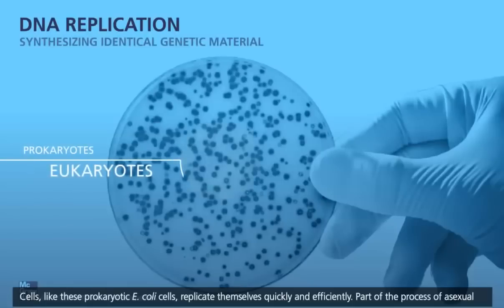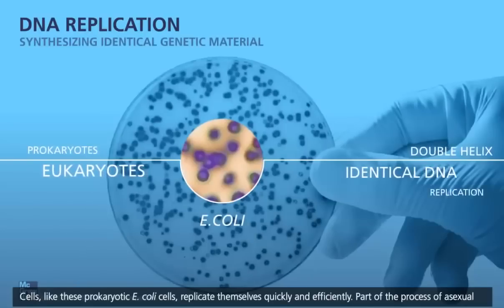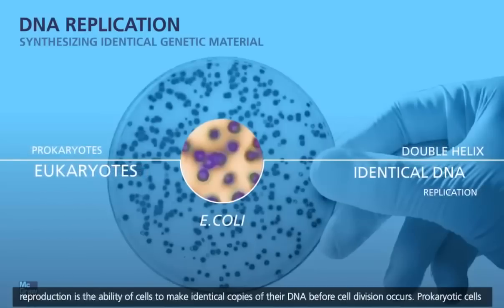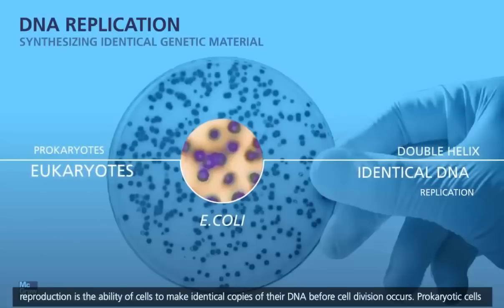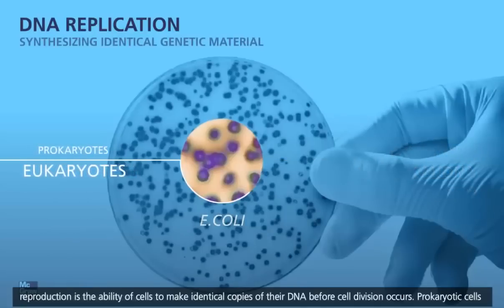Cells like these prokaryotic E. coli cells replicate themselves quickly and efficiently. Part of the process of asexual reproduction is the ability of cells to make identical copies of their DNA before cell division occurs.